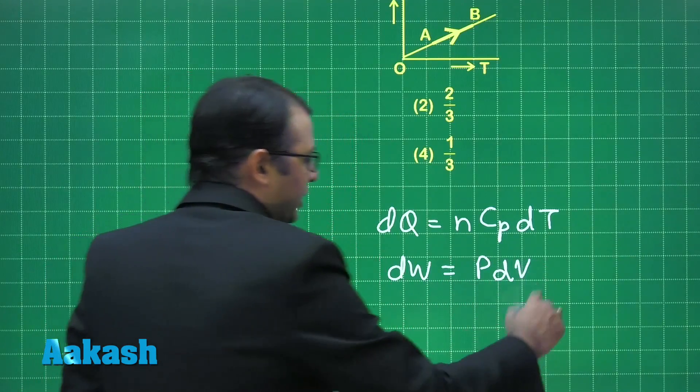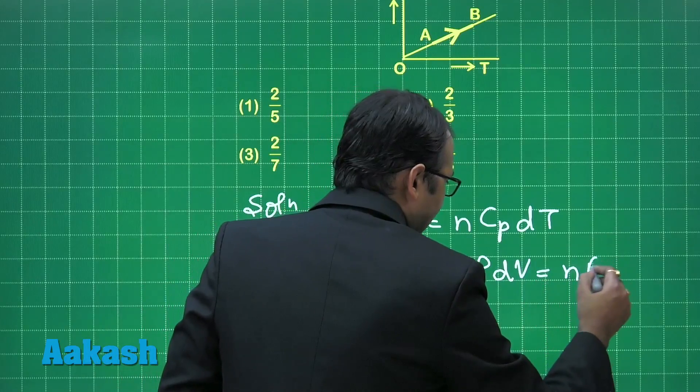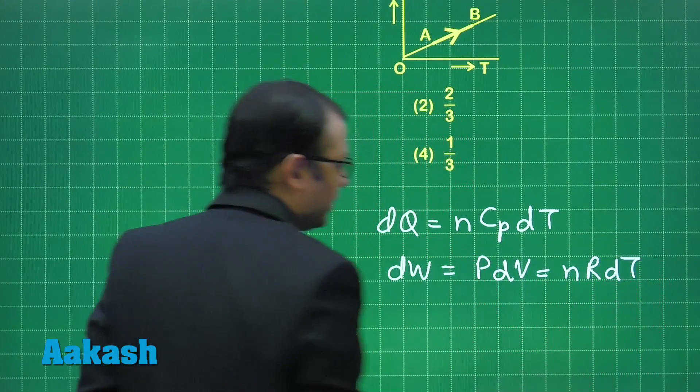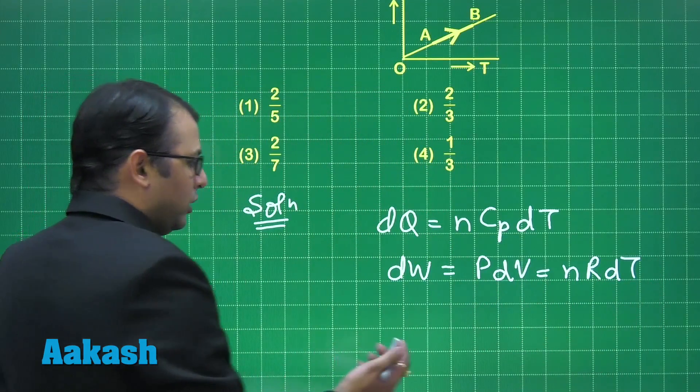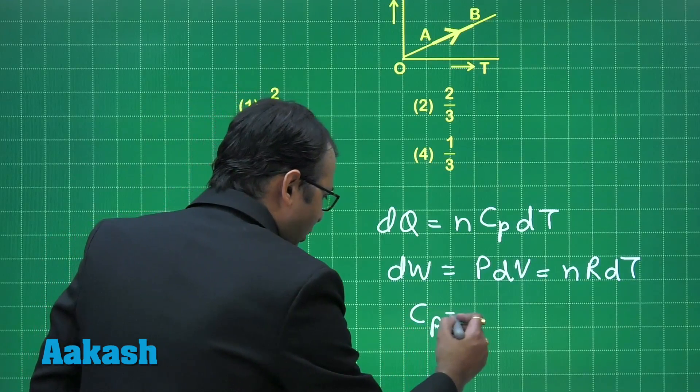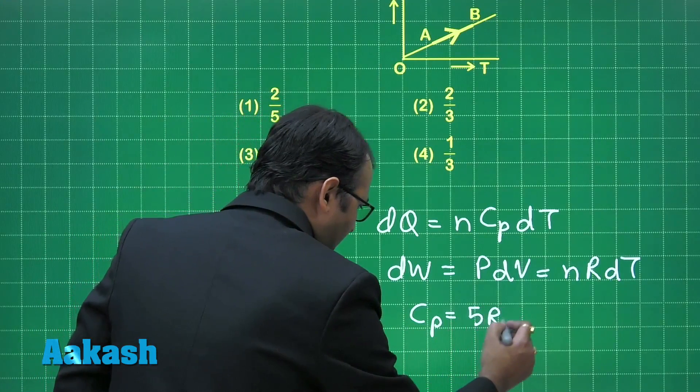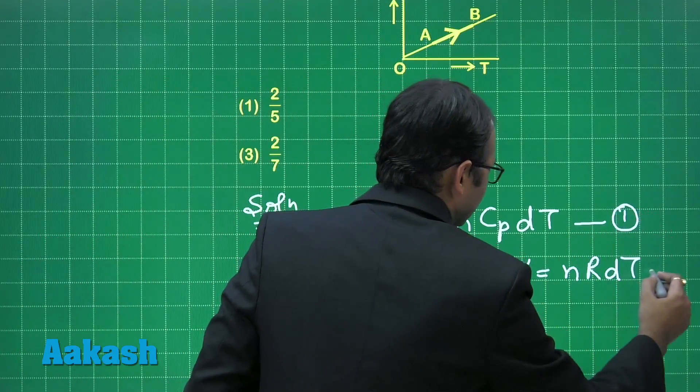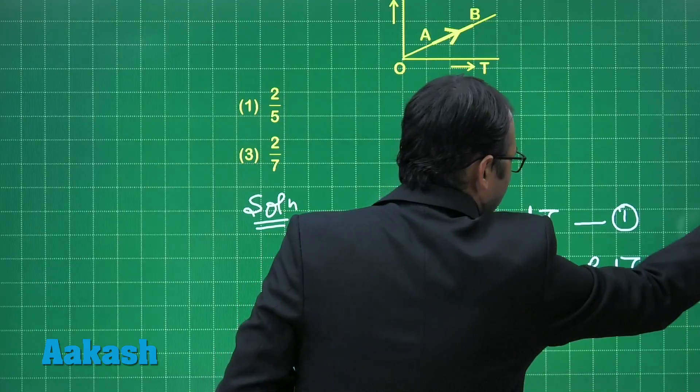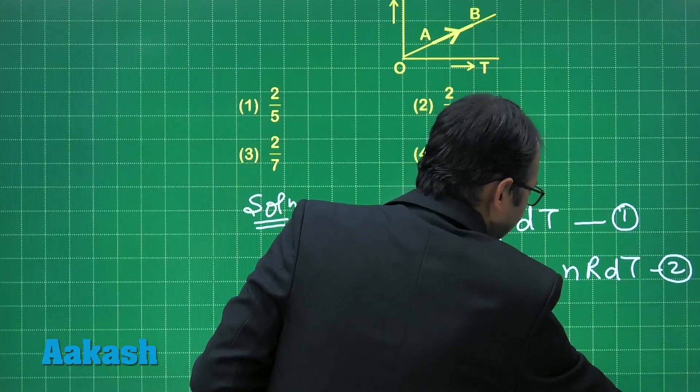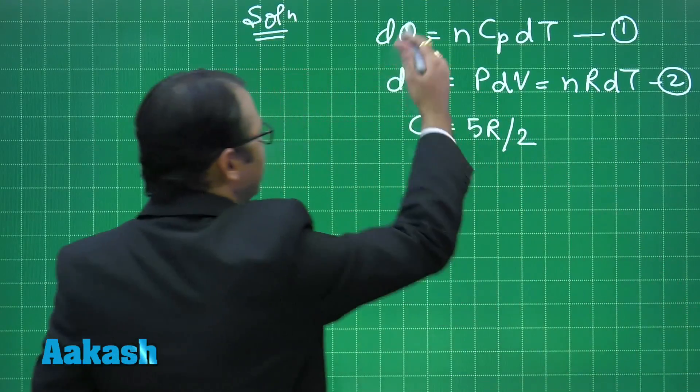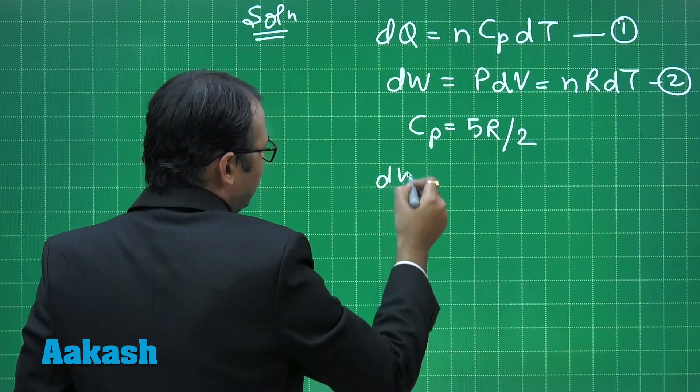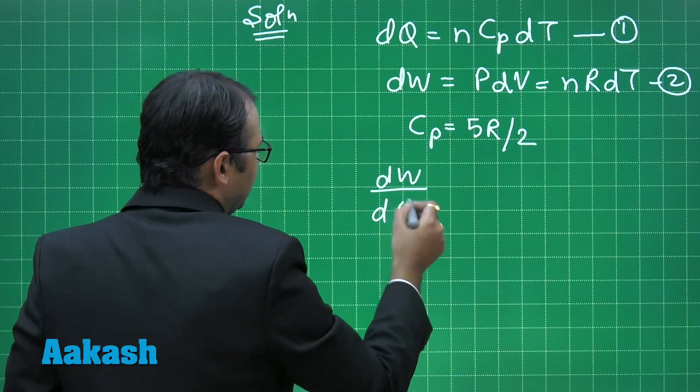or I can also write it as n R dT, right? Now we all know for monatomic gas what is Cp, this is 5R by 2. So let's take the ratio of these two. This is the first equation and this being the second equation. Since we need the ratio of work done to heat, so dW upon dQ